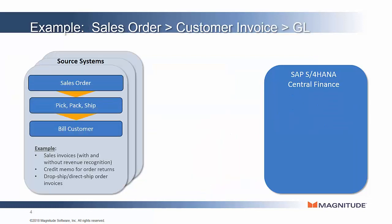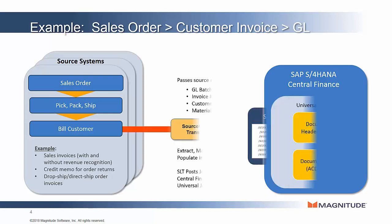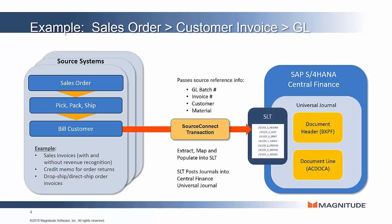As an example, let's take a sales order that goes through logistics and then finally the billing and invoicing process. When the accounting is created for that invoice in the source system, SourceConnect Transaction will replicate that in near real-time — typically 60 to 90 seconds — into the third-party staging area that SAP provides in their SLT interface.